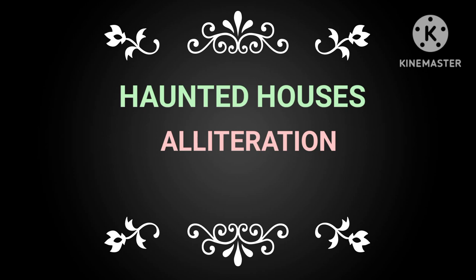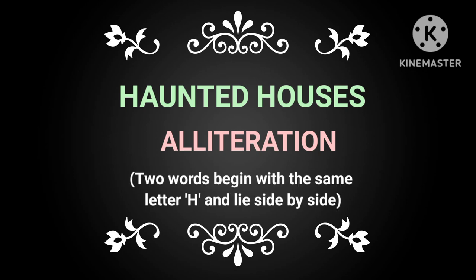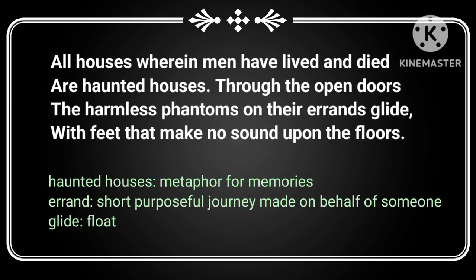Now what is an alliteration? An alliteration is a figure of speech in which two words that begin with the same letter lie side by side. So here in the title Haunted Houses, both words begin with the letter H. So the title is an example of an alliteration. Now let us begin the poem.